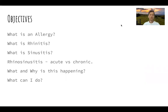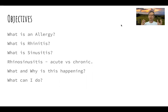Objectives: we'll talk a bit about what's an allergy, what is rhinitis, what is sinusitis, what is rhinosinusitis, and then we'll talk about acute and chronic conditions associated with this — what is it, why is it happening, and what can I do?